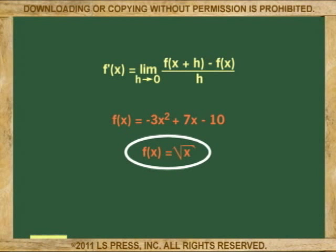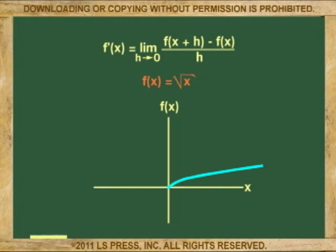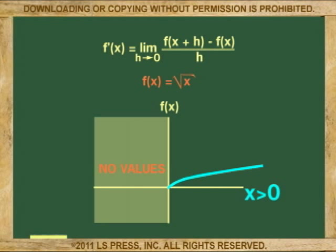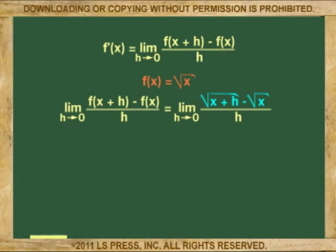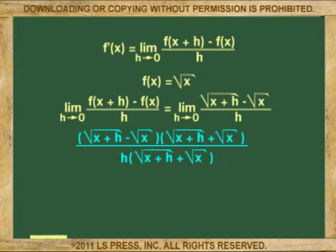The second example is the function of x equals the square root of x, which is represented by this curve. Notice that this function doesn't allow for negative values of x, so x is greater than 0. Anyway, let's do our substitution into the derivative equation. The f prime of x when h approaches 0 is equal to the square root of x plus h minus the square root of x, all of it over h.